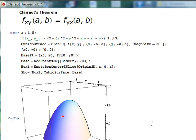Hi everyone, this is going to be a demonstration on Clairaut's Theorem. Clairaut's Theorem states that if f is continuously differentiable twice, then the following is true.